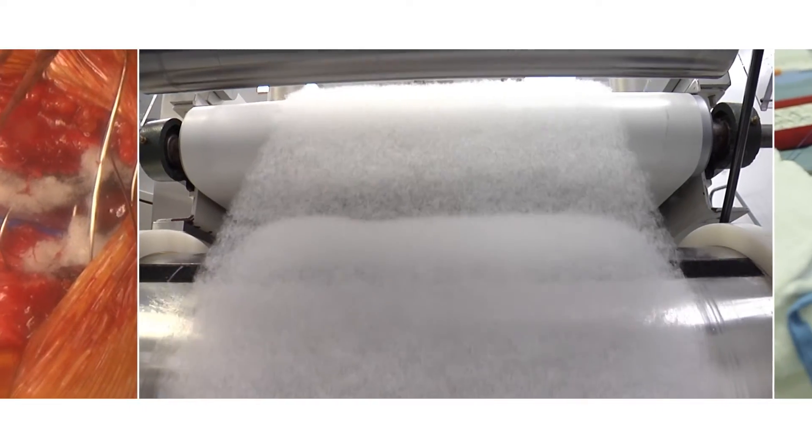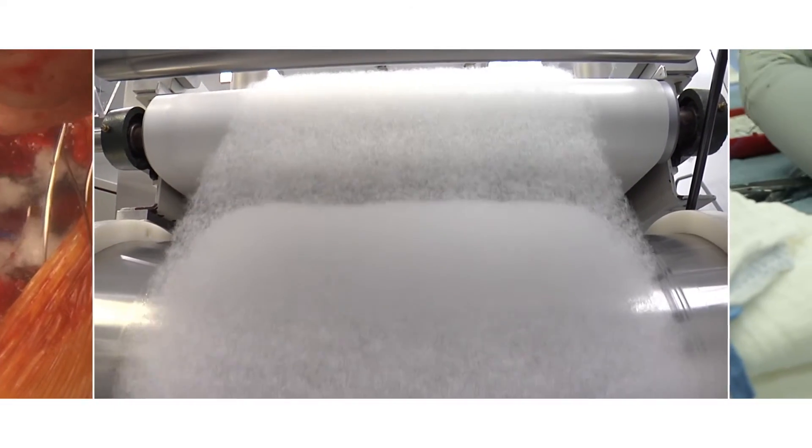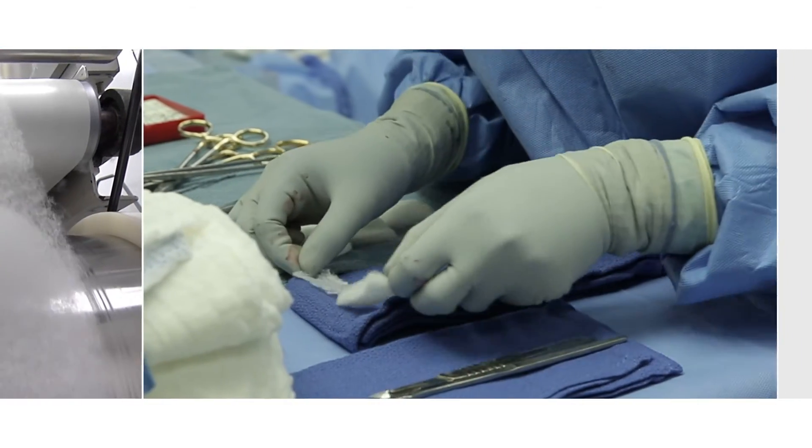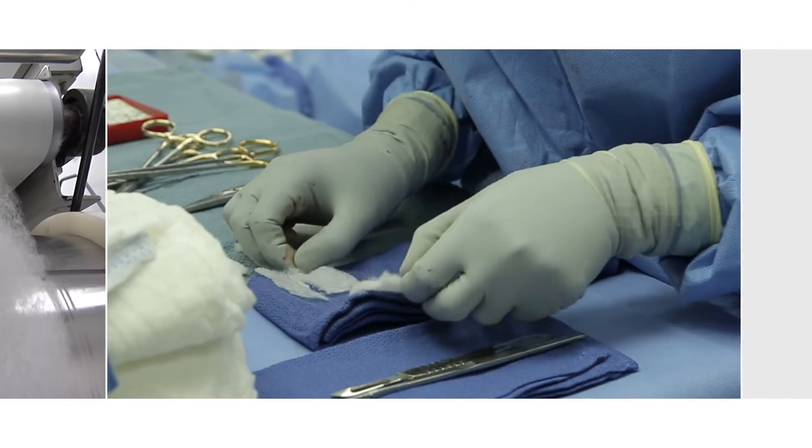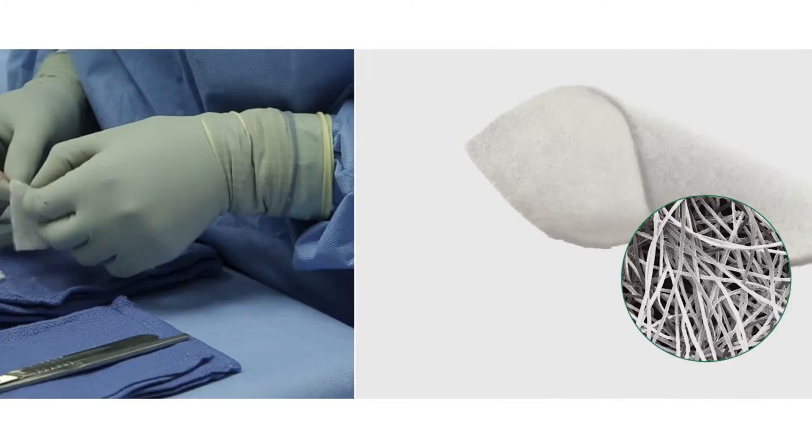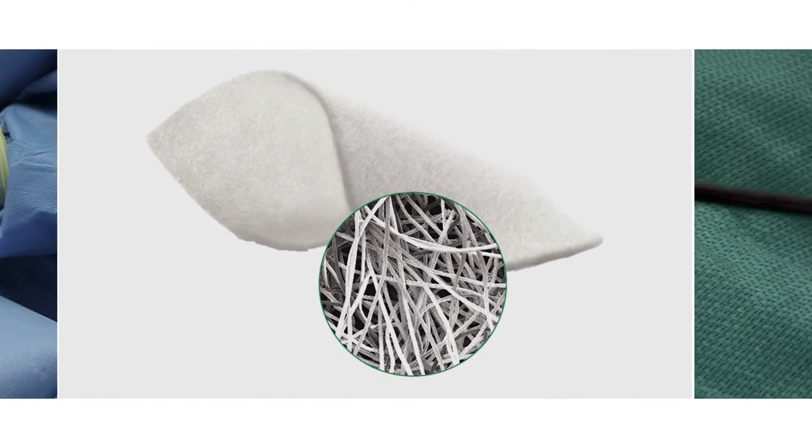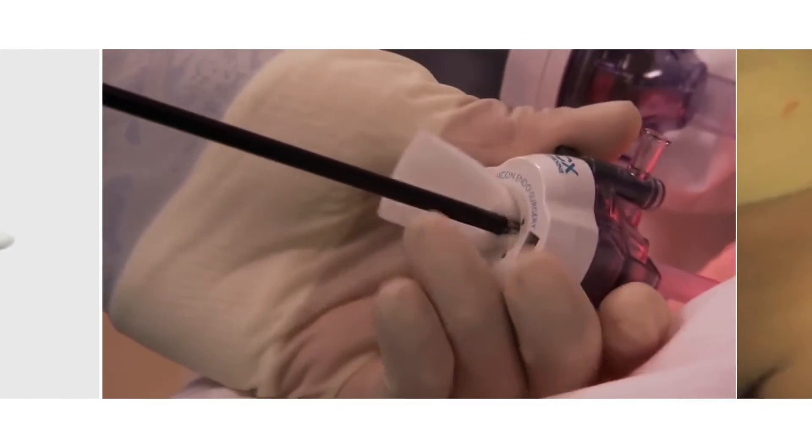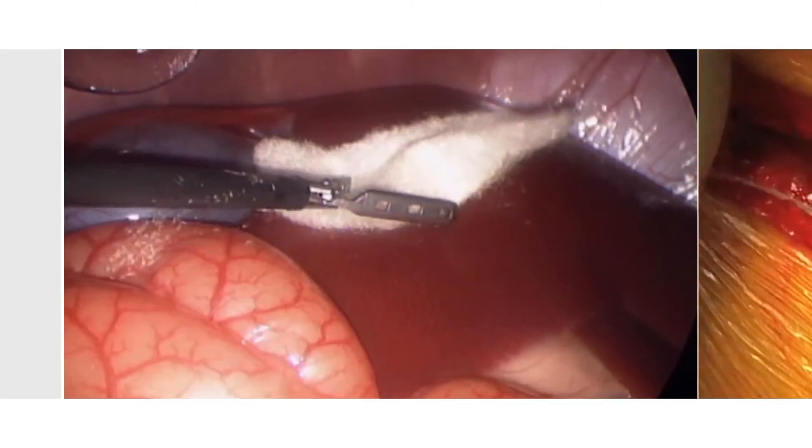Because they are non-woven, advanced Surgicel hemostats also have unique handling capabilities. Surgicel Fibrillar has a layered construct that can be teased apart easily, allowing precise placement in challenging procedures. Surgicel Snow is a felt-like material, ideal for deployment, positioning, and conformability in both open and minimally invasive procedures.